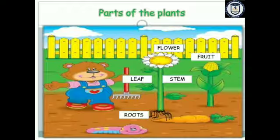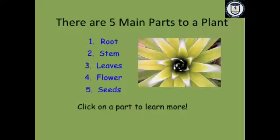Let's look at which parts are available in our plants. We have mainly five parts: roots, stem, leaf, flower, and seed. These are the main parts available in our plants. We can see all of these parts in a complete plant.